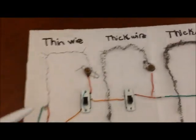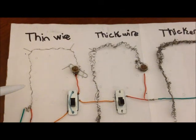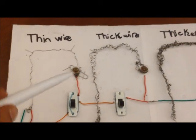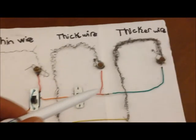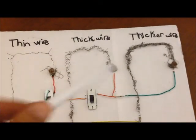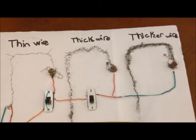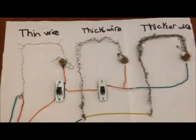What you see here is a thin wire, which is basically one strand of steel wool, and then a couple of them put together to represent a thick wire. The thickest wire is represented by a bunch of them, like 10 or 11 of those.